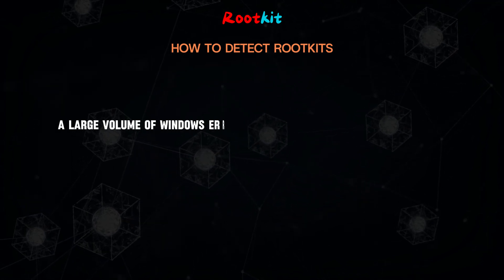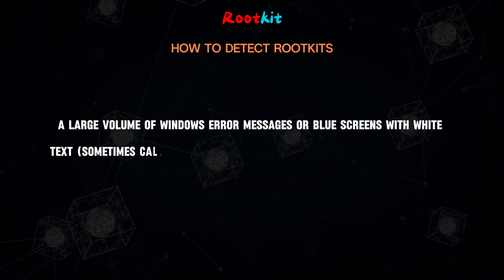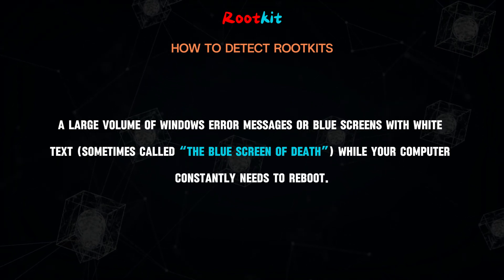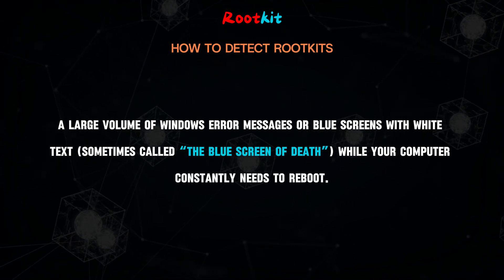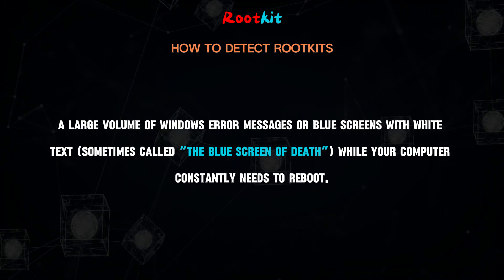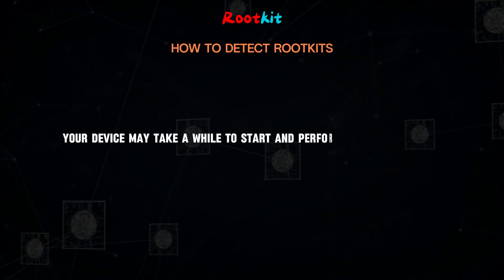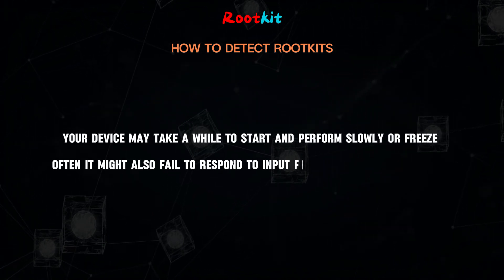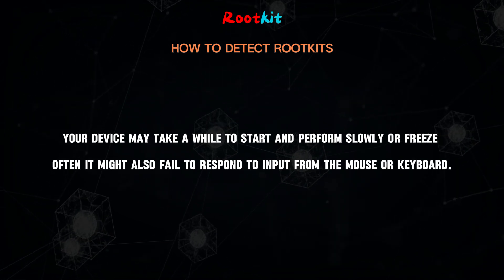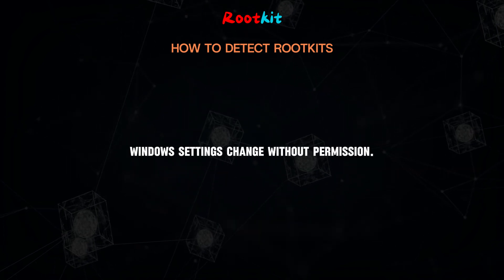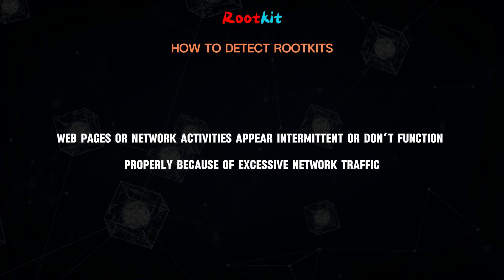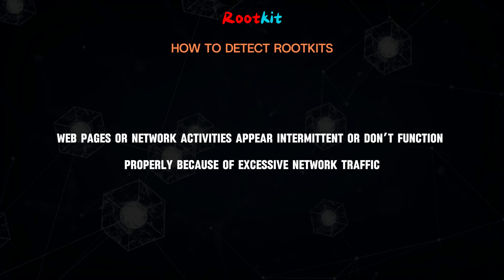Possible signs of rootkit malware include: a large volume of Windows error messages or blue screens with white text, sometimes called the Blue Screen of Death, while your computer constantly needs to reboot. This might also include unrecognized bookmarks or link redirection. Your device may take a while to start and perform slowly or freeze often, and might fail to respond to input from the mouse or keyboard. Windows settings may change without permission, and web pages or network activities may appear intermittent or not function properly because of excessive network traffic.